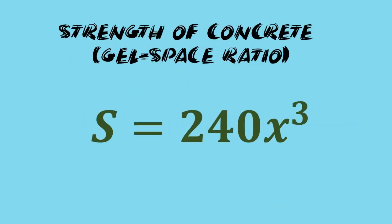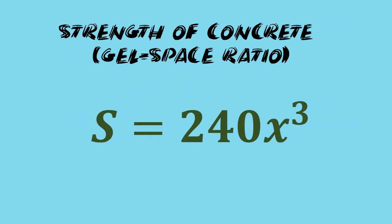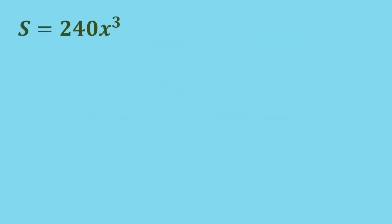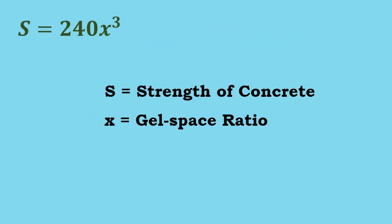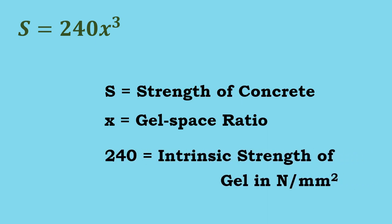The strength of concrete considering gel space ratio is calculated by S = 240x³, where S is the strength of concrete, x is the gel space ratio, and 240 is the intrinsic strength of gel in N/mm² for the type of cement and specimen used.